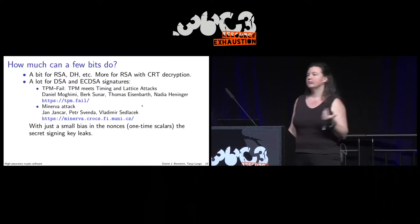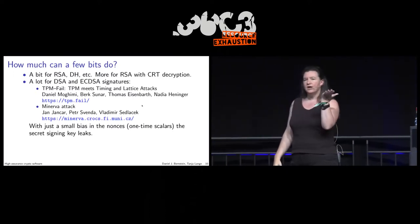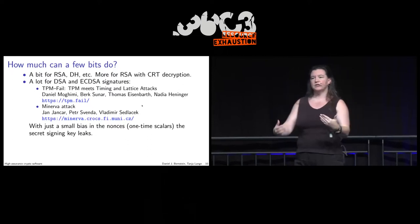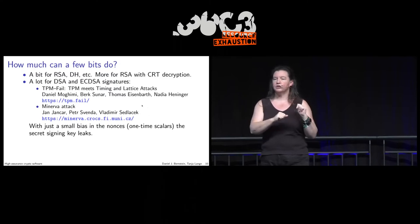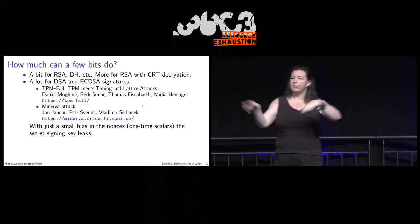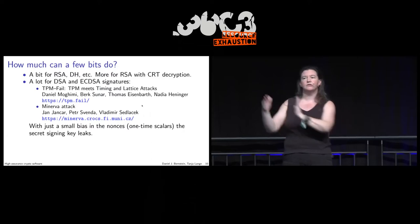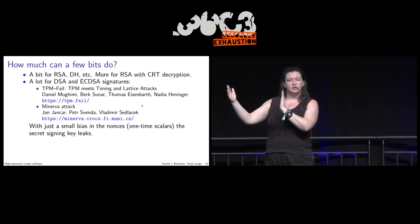If you use DSA signatures or ECDSA, they are very fragile, because you use a multiplication only once. You use a random number, do a multiplication, exponentiation, and do something else with that random number — these one-time exponents. If someone knows the first few bits, that's it — you know the secret key.